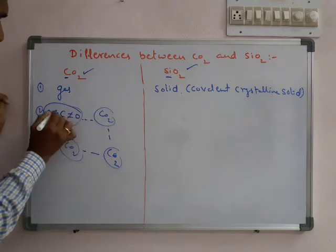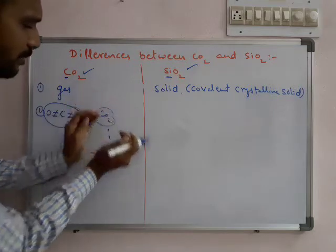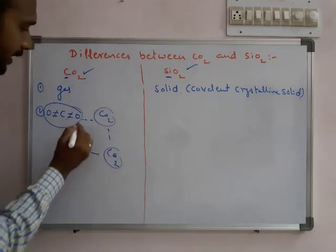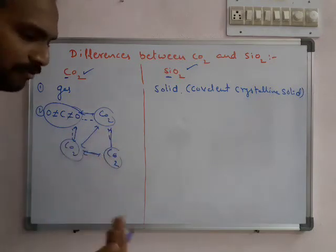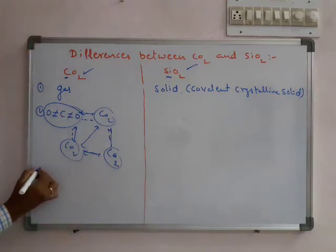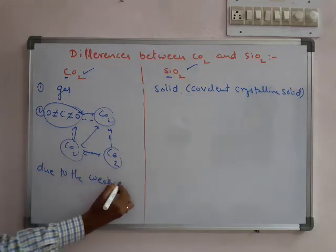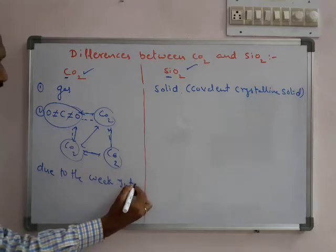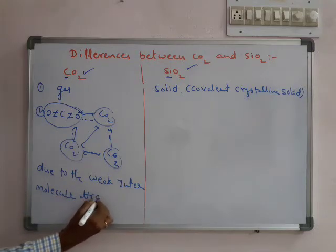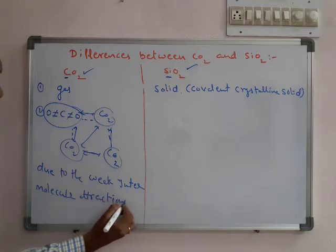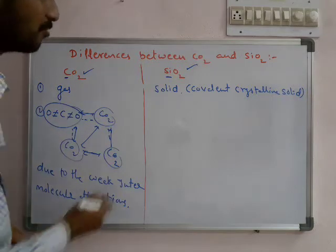These bonds are very strong. Each individual CO2 is stable, this CO2 is stable, this CO2 is stable. But the bond present between two different carbon dioxides - there are no perfect attractions. There is no perfect attraction due to weak intermolecular attractions. It is in the form of a gas.